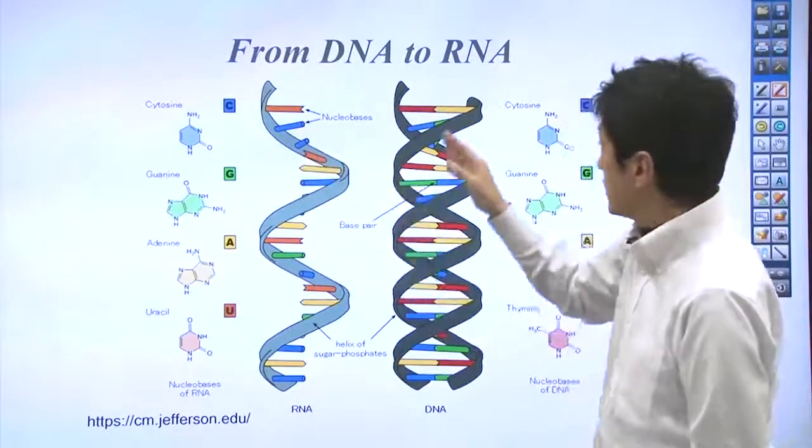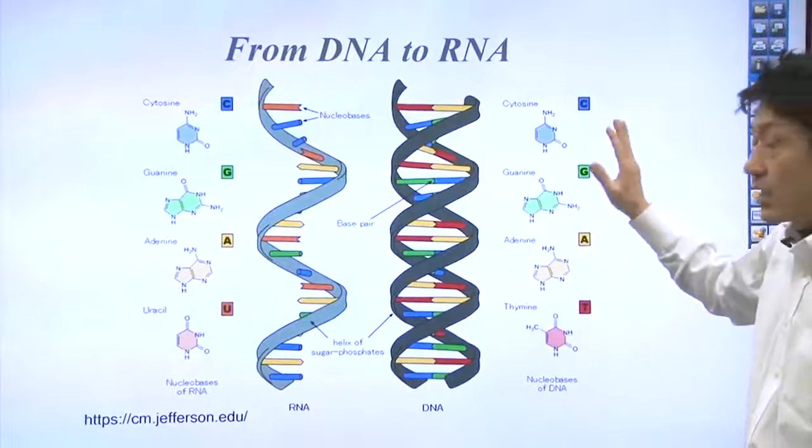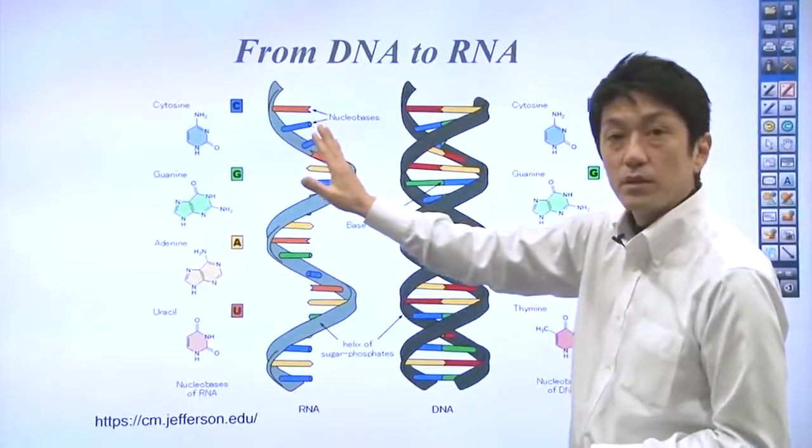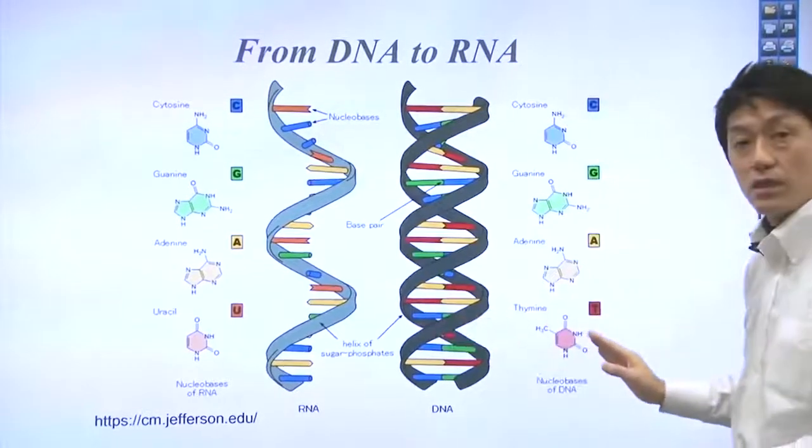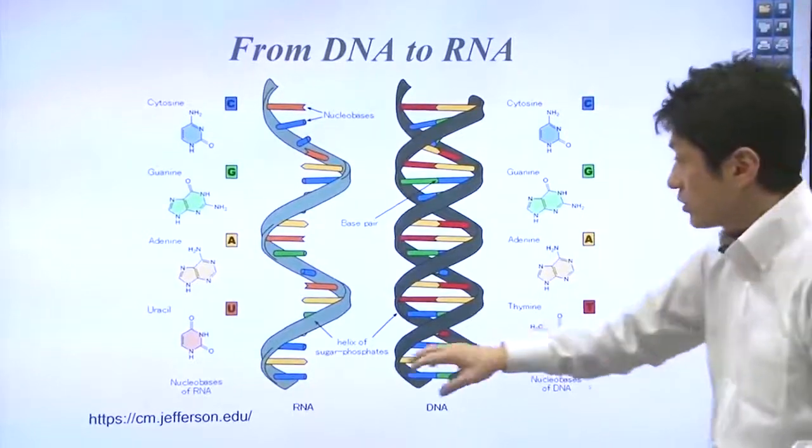In RNA, A, G, and C are copied, while T is replaced with uracil.